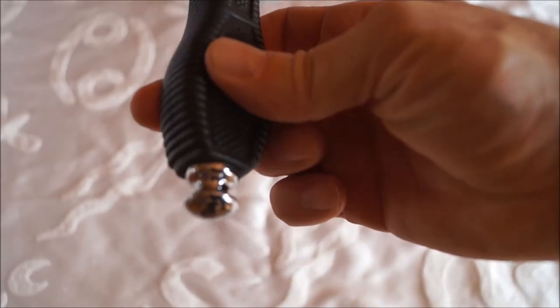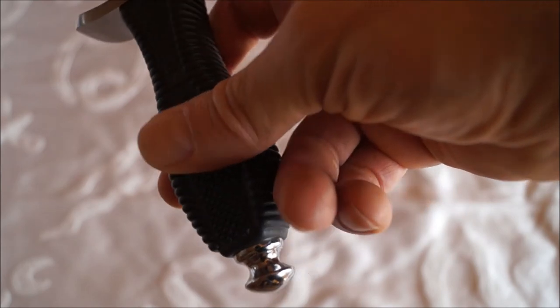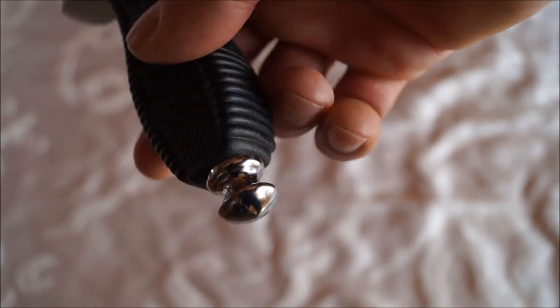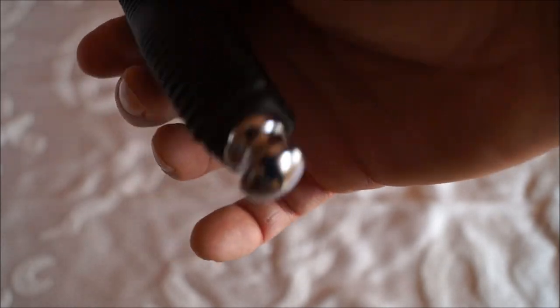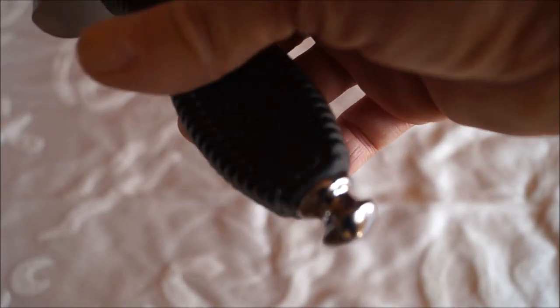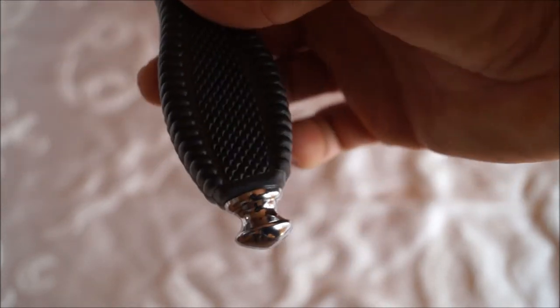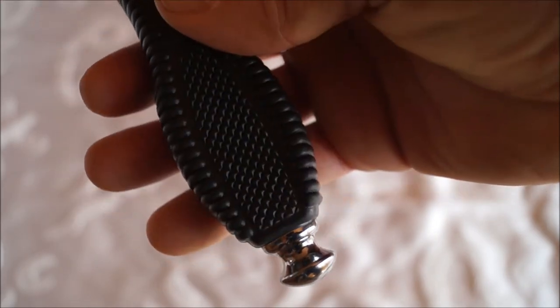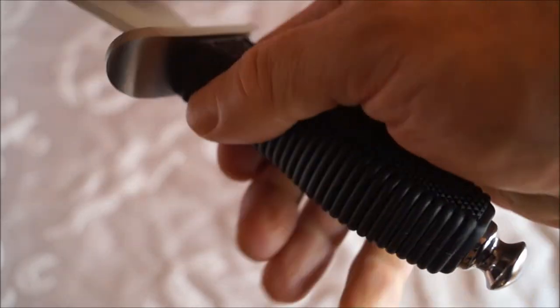Und das Ende besteht aus einem verchromten, gerundeten Knopf. Daran ließe sich auch sehr gut ein Fangriemen anbringen. Ohne Öse wäre das ja möglich. Eine Schlaufe verbinden und schon hält die.